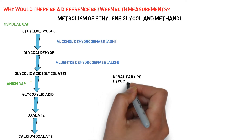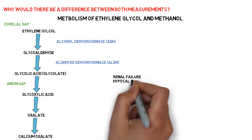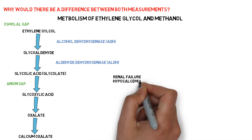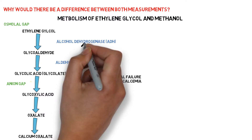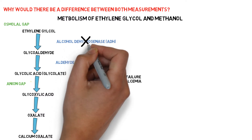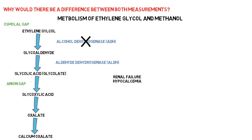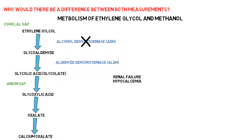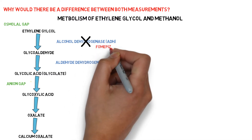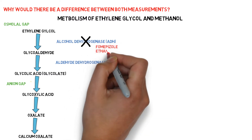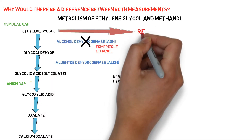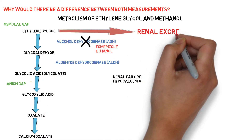Glycolic acid and glyoxylic acid are the substances responsible for most of the signs and symptoms of ethylene glycol poisoning, including renal failure and hypocalcemia. When treating cases of ethylene glycol poisoning, fomepizole or ethanol can be used to block the alcohol dehydrogenase enzyme, which will facilitate renal excretion of ethylene glycol without it being metabolized.